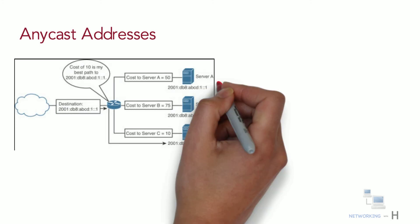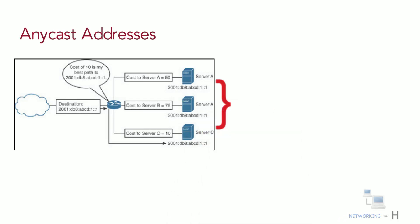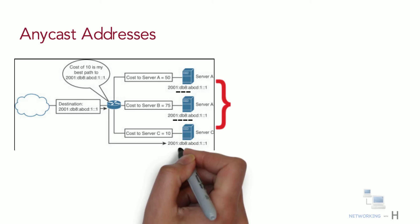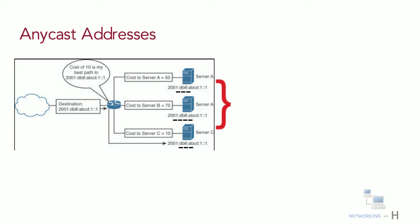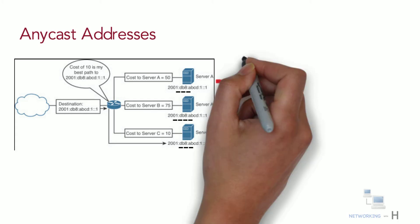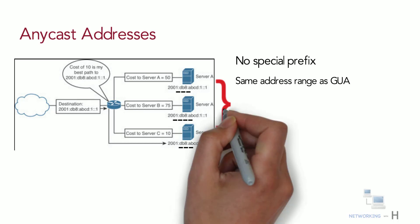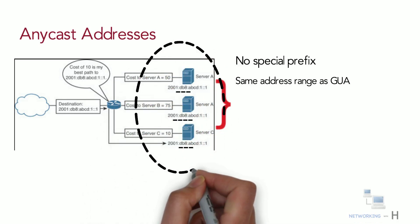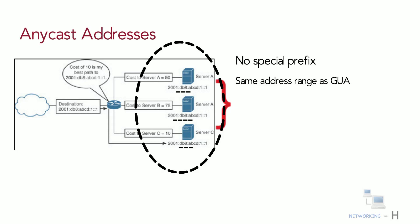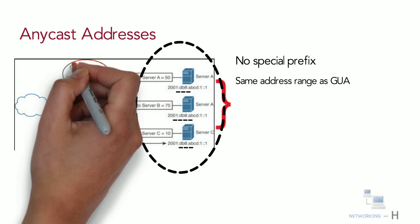The last type of IPv6 address is the anycast address. An IPv6 anycast address is an address that can be assigned to more than one device — multiple devices can share the same anycast address. A packet sent to an anycast address is routed to the nearest interface having that address, according to the router's routing table. There is no special prefix for an IPv6 anycast address — it uses the same address range as global unicast addresses. For example, three servers could be DHCPv6 servers advertising the same /128 address using OSPFv3, and the router nearest to the client request would forward packets to the nearest server identified in the routing table.